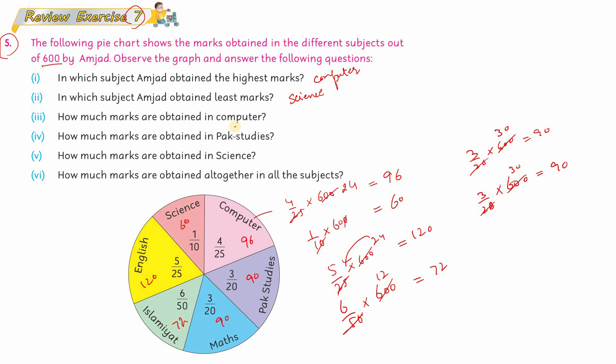Part three: How much marks are obtained in Computer? Computer has 96 marks, so write 96 marks there. How much marks are obtained in Pak Studies? Amjad obtained 90 in Pak Studies, so write 90 marks there. Easy, right?